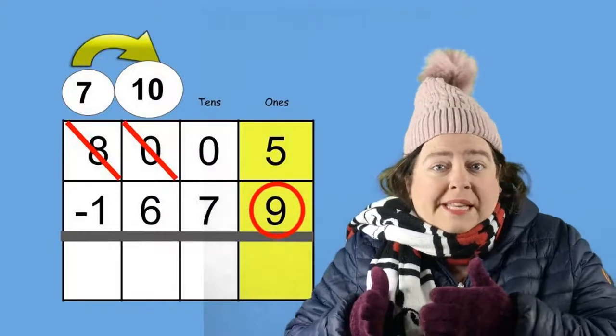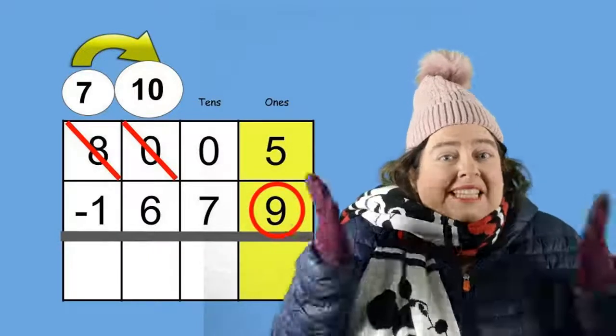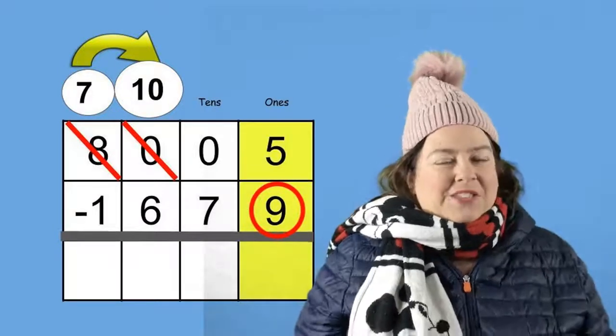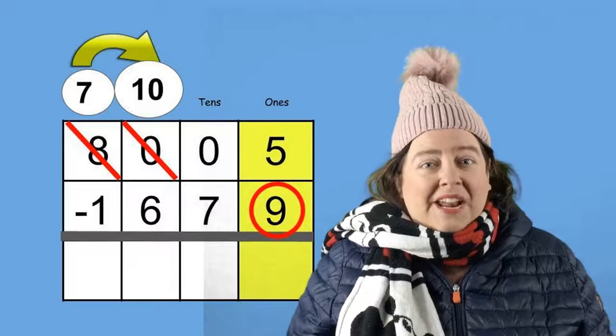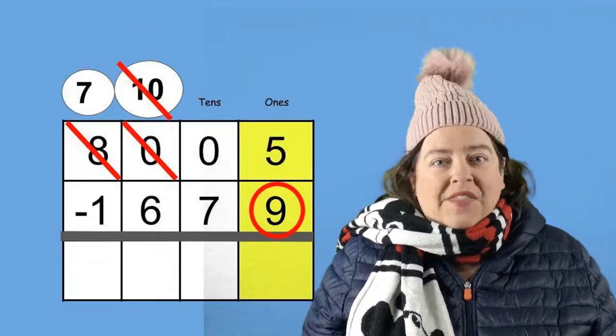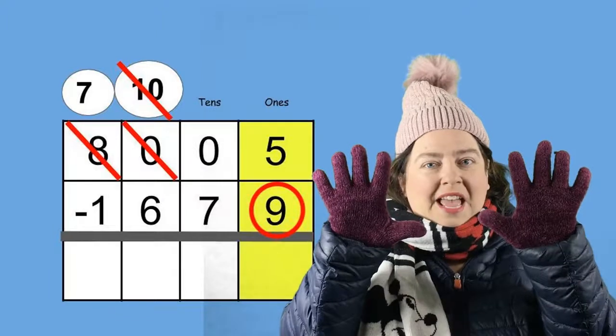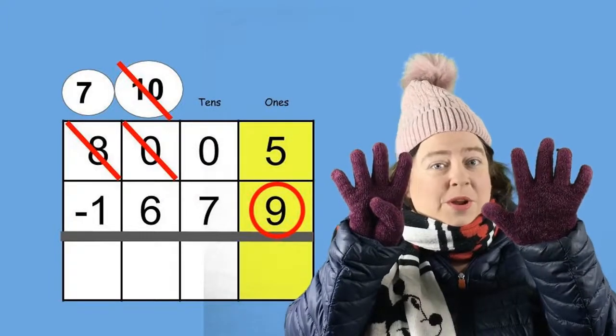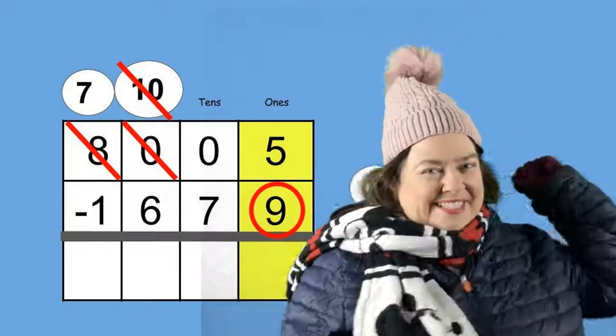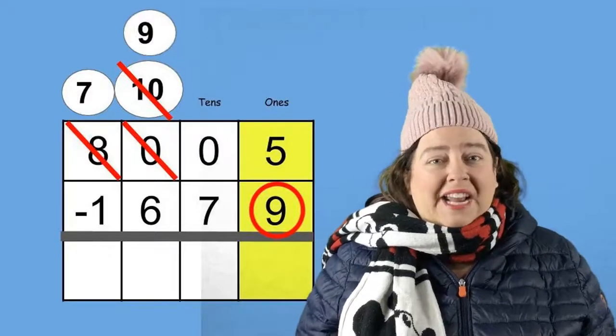But now when I go back to the ones again, I still have a five. I cannot get nine from that. And I still can't get it from the tens place. But now I can go to the hundreds place because I have ten hundreds. So what am I going to do? I'm going to cross out the ten. And now what does that make it? If you have ten and you take one away, what do you have now? Let's throw a snowball and find out. Now I have nine in the hundreds place.